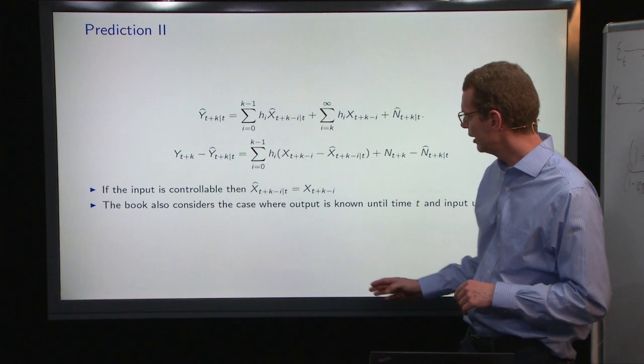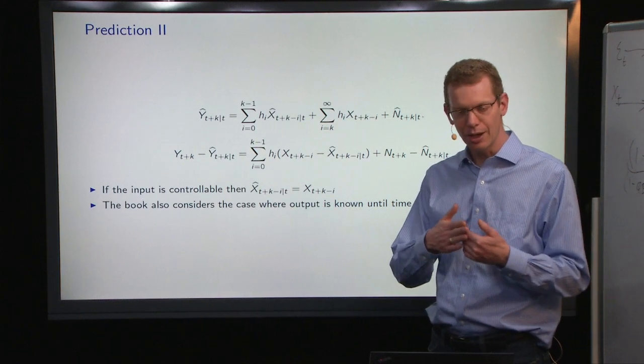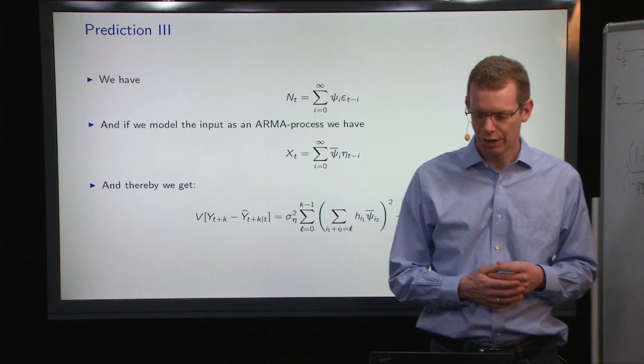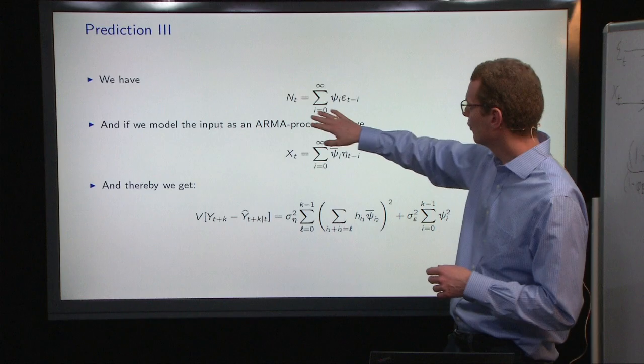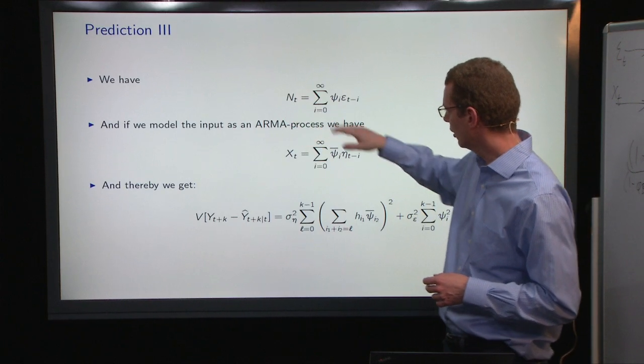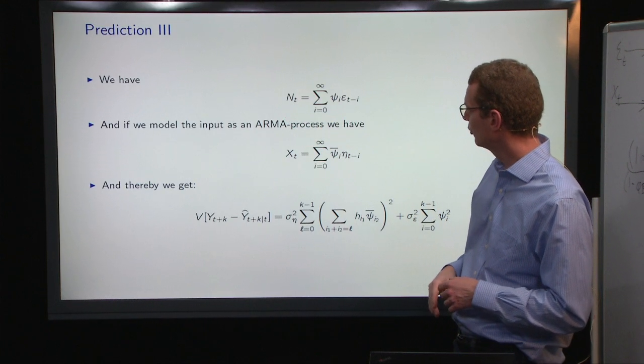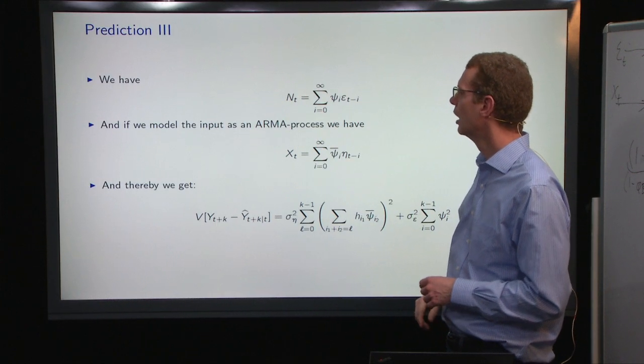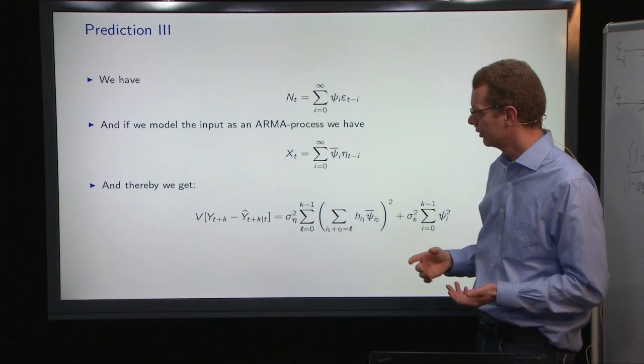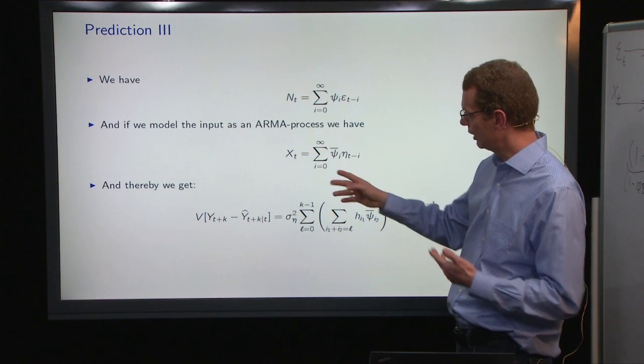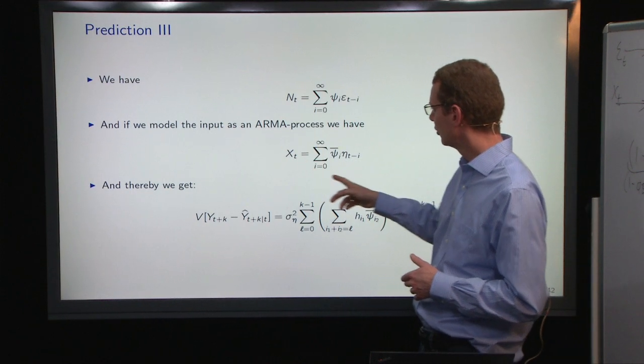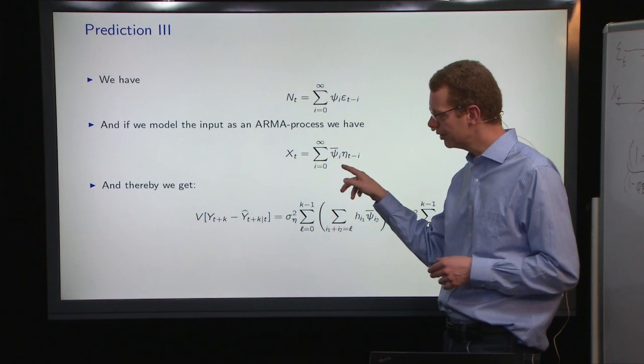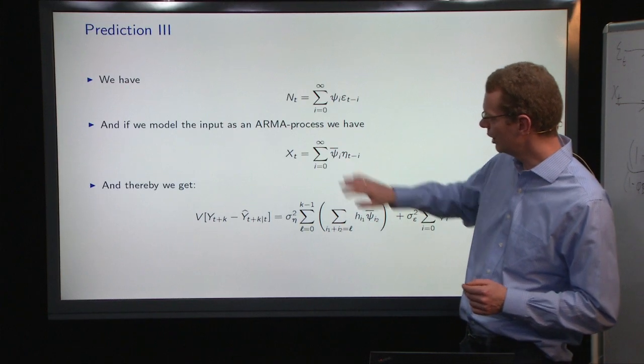And, of course, you can also have the case where you know the input part of the time, but not all K-steps ahead. Now, if you have the input noise, you can write it on Psi-form. That's basically what you do when you move the AR part to the right-hand side. And then, what you can then do if you want to predict the input signal, you can do the similar thing for the input noise. Just another Psi bar here to know that that's for the input here.